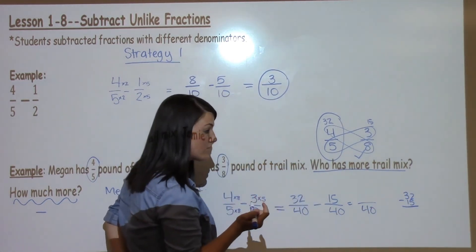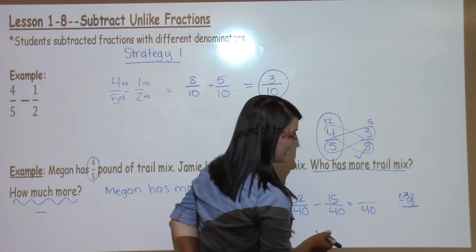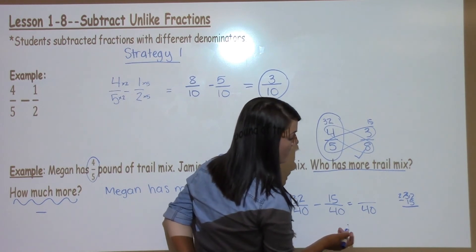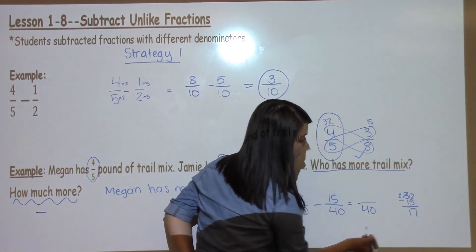I cannot take 5 away from 2 so I have to borrow from the 3, add 10 to the 2 which makes it a 12. 12 minus 5 is 7, 2 minus 1 is 1.